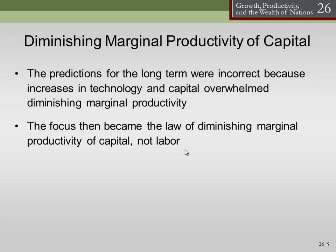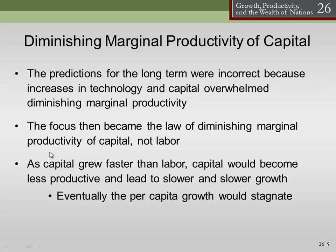The focus has become on the law of diminishing marginal productivity of capital, not on labor. One of the reasons why we don't worry about labor so much is because if we look at the developed world, the populations of the developed world are either stable or diminishing. If we look at the underdeveloped and developing countries, their population seems to be growing. But if we look at the rich countries of the world — the G20, countries like the United States, the European countries, Canada, Japan — we see the populations are pretty well stable.